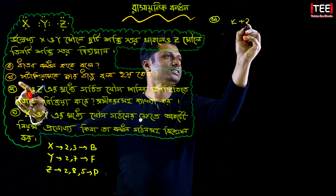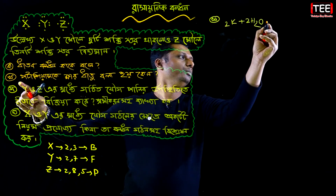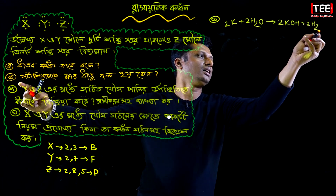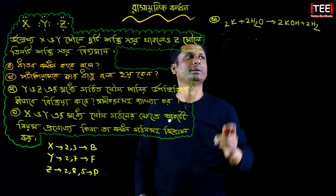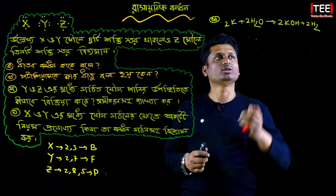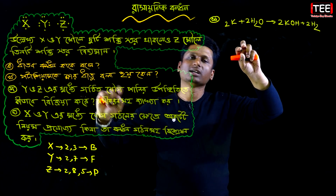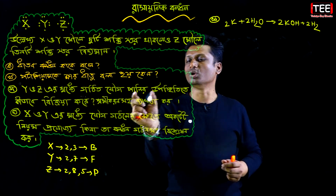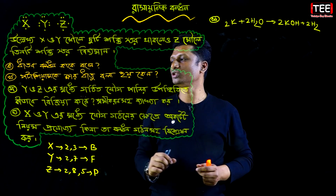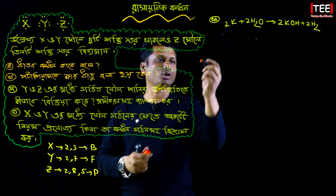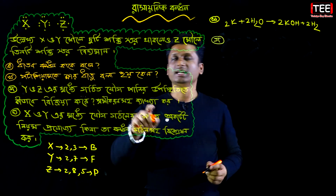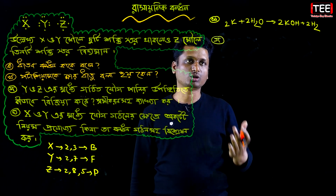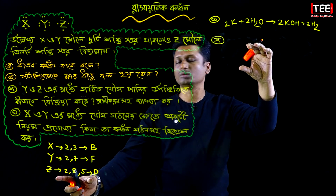Potassium plus water gives potassium hydroxide plus hydrogen. We know that potassium hydroxide is a good product. What is potassium hydroxide? What is potassium hydroxide plus water? First of all, we have to write the potassium hydroxide. We have to write potassium hydroxide plus electron. But when we answer the question, we will find out.